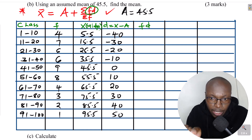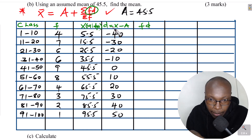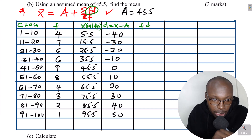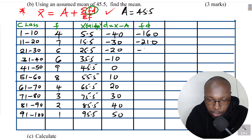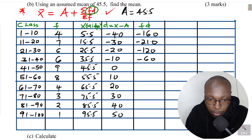Now multiply f by d for each row to get the fd column: 4 × (−40) = −160; 7 × (−30) = −210; 6 × (−20) = −120; 6 × (−10) = −60; 9 × 0 = 0; 8 × 10 = 80; 4 × 20 = 80; 3 × 30 = 90; 2 × 40 = 80; 1 × 50 = 50.